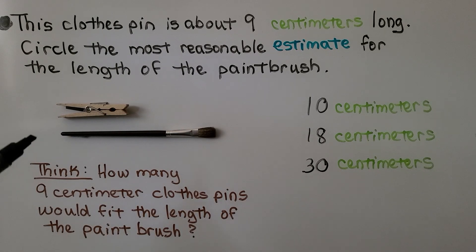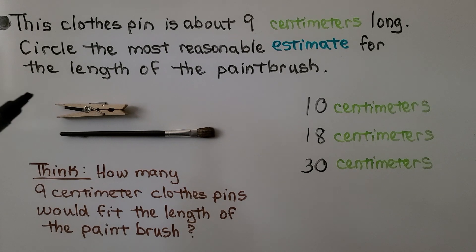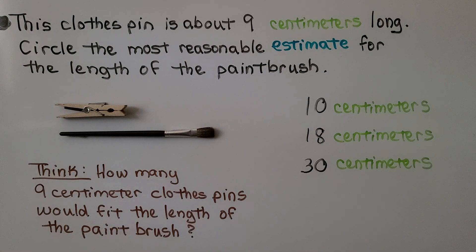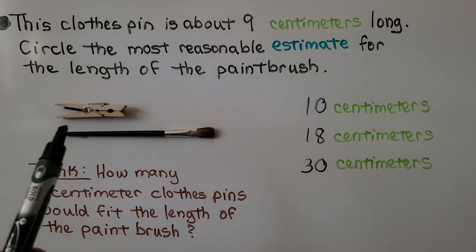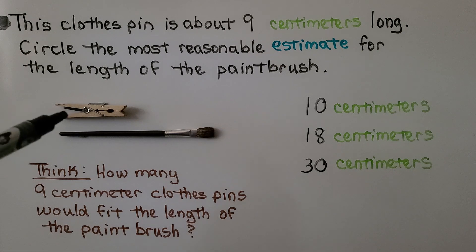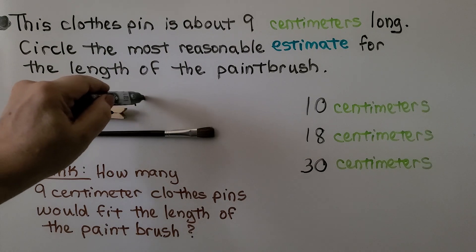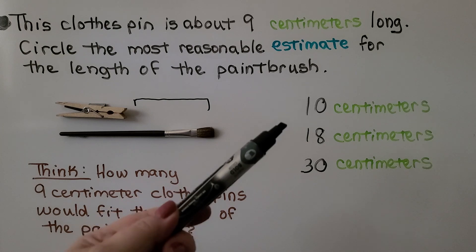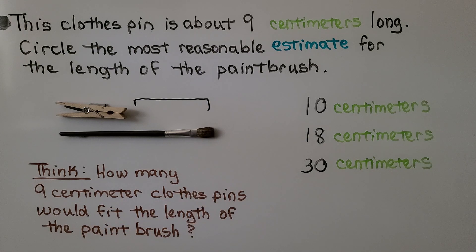This clothespin is about 9 centimeters long. We need to circle the most reasonable estimate for the length of the paintbrush. We think: how many 9-centimeter clothespins would fit the length of the paintbrush? Here we have one — can you imagine another one? Our choices are 10 centimeters, 18 centimeters, or 30 centimeters.